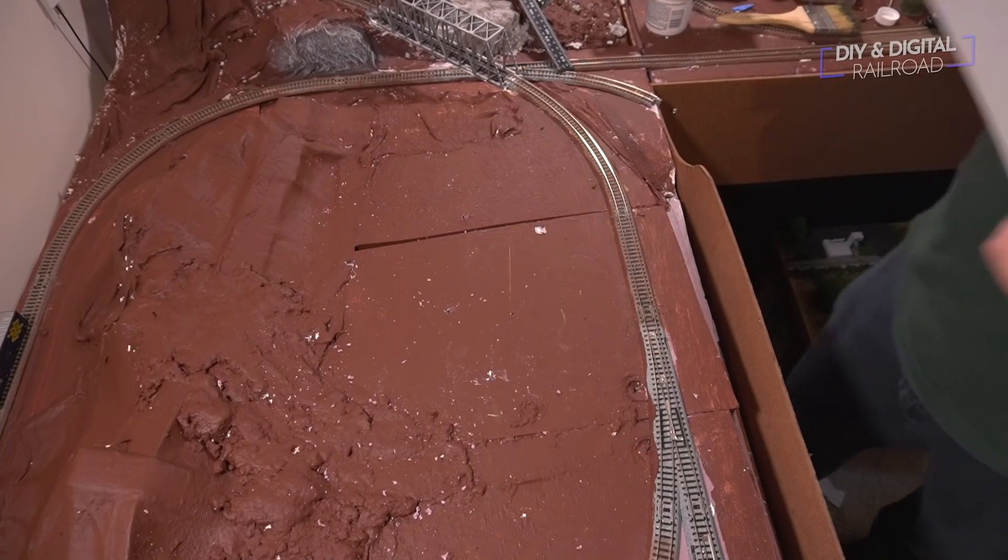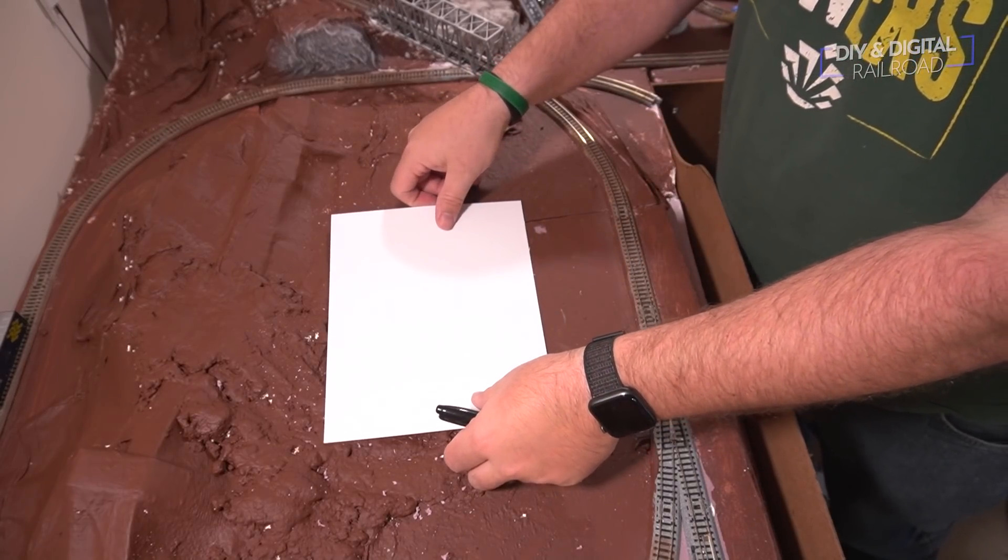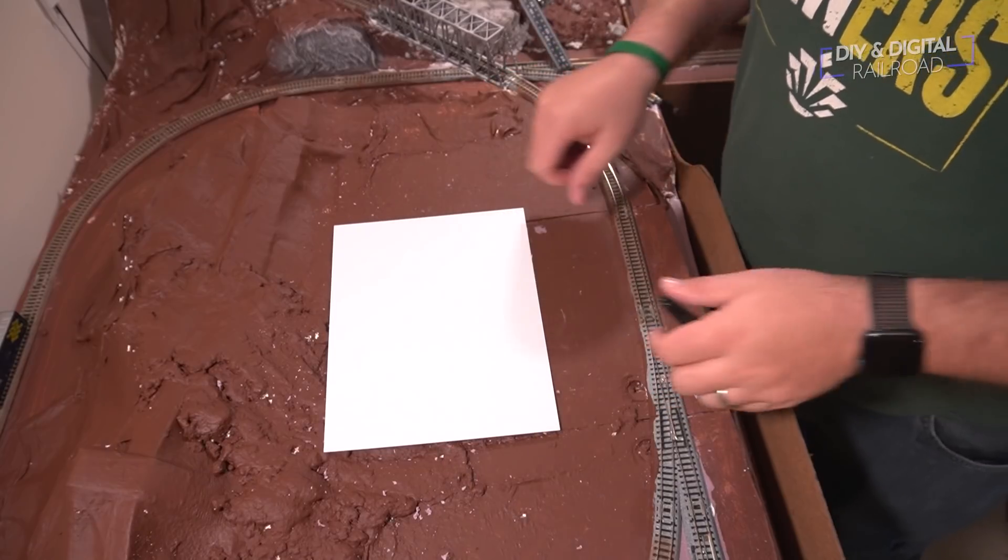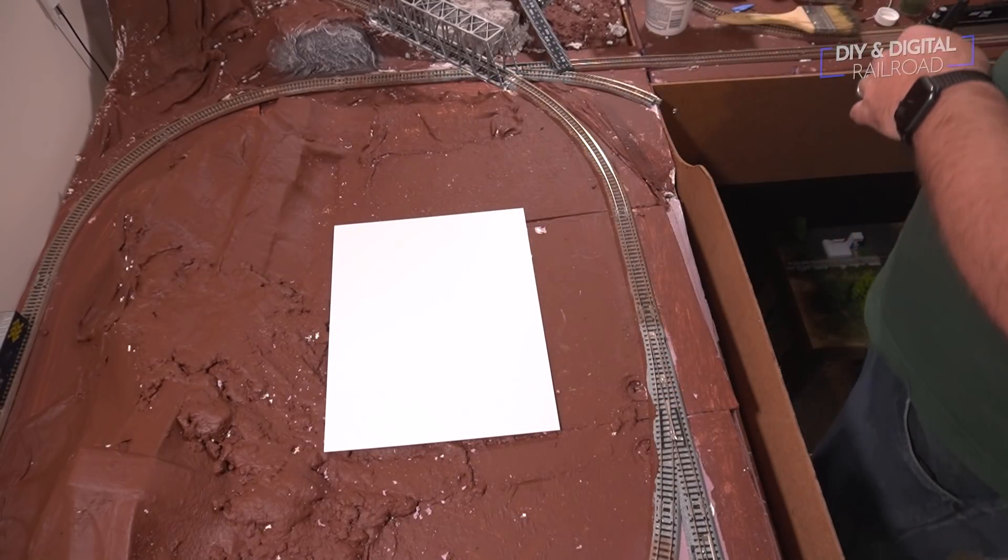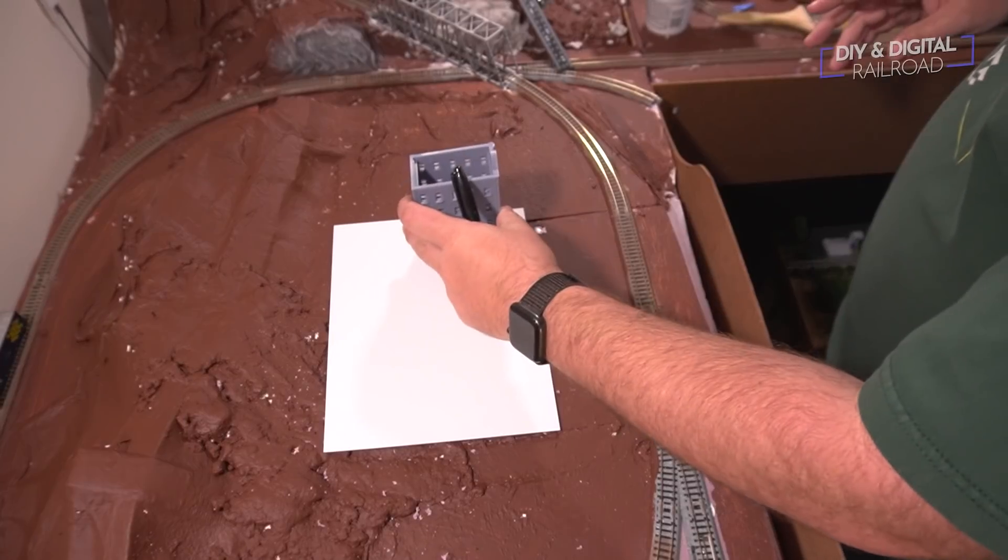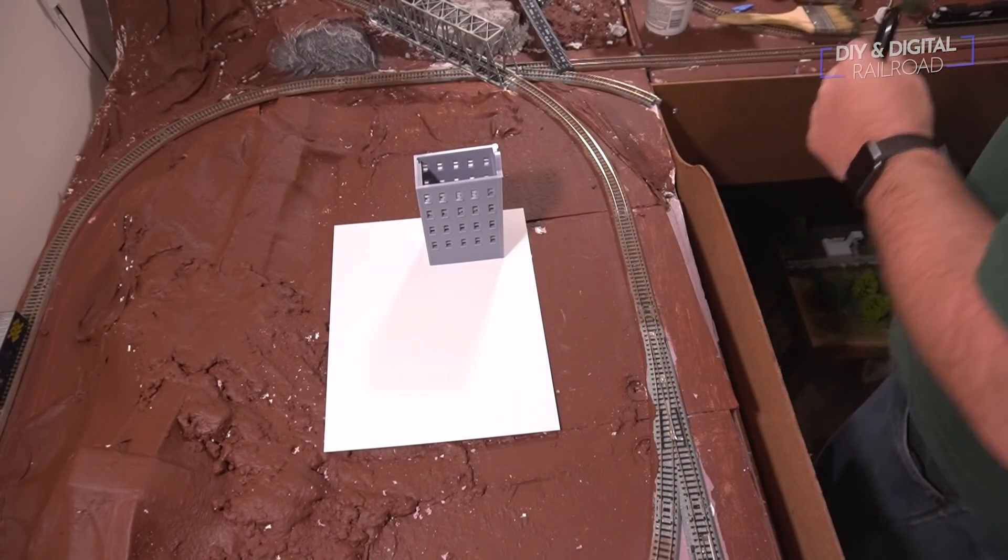We are going to be building this module on a sheet of styrene. This particular sheet is 0.04 inches thick, and it is an 8 by 10 sheet. I will link it in the description below, and I'm going to bring the buildings in that are going to be on this.